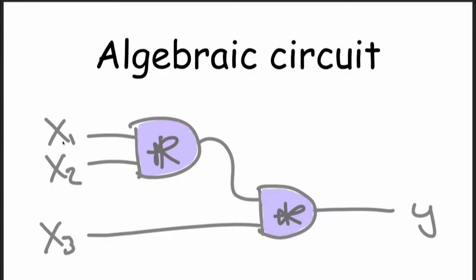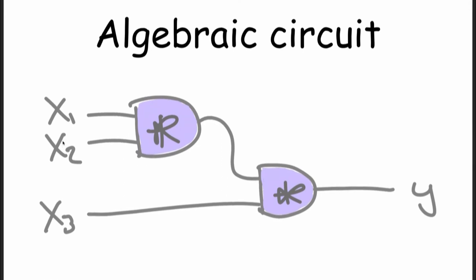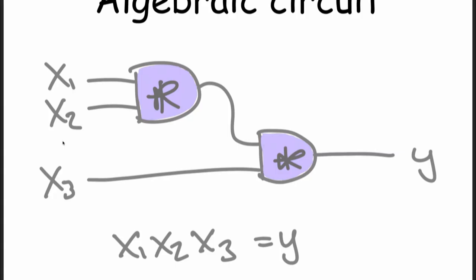An algebraic circuit looks like this — these squiggles are my multiplications. The computation in this case specifically is x1 times x2 times x3. We are proving we know x1, x2, and x3 such that their product equals some y. As an algebraic circuit, in each multiplication gate there are two input wires and one output wire.